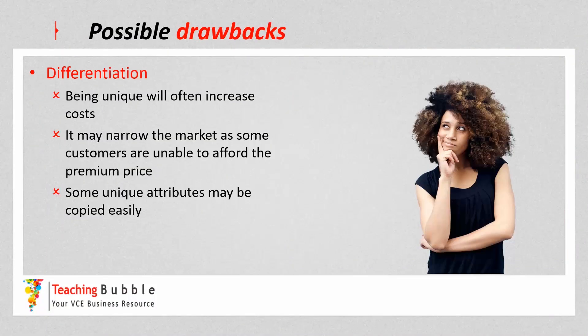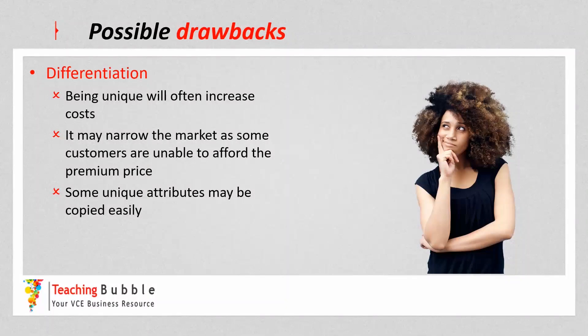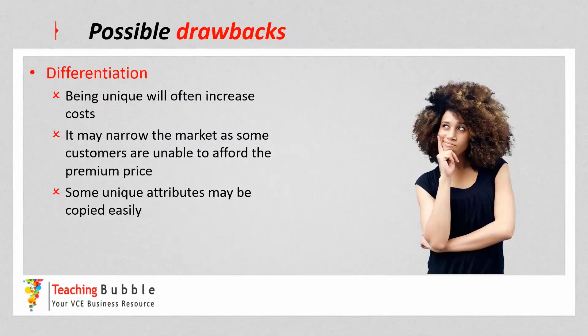On the negative side, being unique is often more expensive. Adding new features, having high quality materials, acquiring legal protections like patents, or investing in areas that differentiate the business all cost money and will likely increase expenses. Because the business charges a premium price, it can also narrow the market as some customers simply may not be able to afford it. Finally, if the unique features are not protected in some way, they can be easily copied by competitors, taking that competitive advantage away.